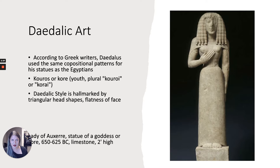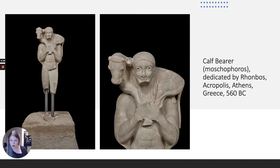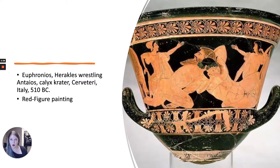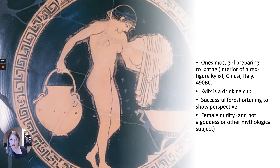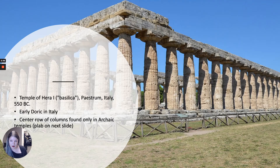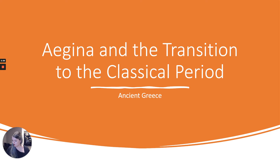Then we got into the archaic period and talked about Daedalic art, which takes a lot of cues from Egyptian styles. We went through sculptures from this time period and talked about different kinds of clothing, then vase painting quite a bit, then architecture — metopes, triglyphs, Doric and Ionic columns, the entablature, and the general layout of archaic temples. We looked at the Temple of Hera I as a good example of the Doric order, and that's where we left off.